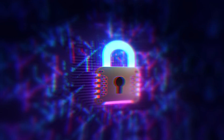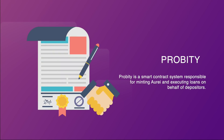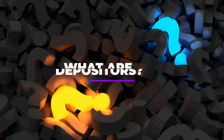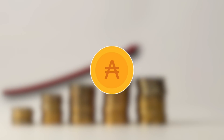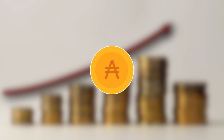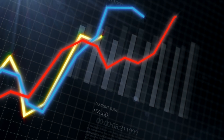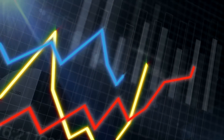Let me introduce Probity, and more specifically, the Probity Vault. Probity is a smart contract system responsible for minting RA stablecoin and executing loans on behalf of depositors. A depositor is a user who deposits collateral, such as Spark or F assets, into a Probity Vault, allowing them to receive RA or earn interest. This is what allows Probity to mint RA in a fully decentralized manner, satisfying the supply side of the Probity ecosystem — users willing to supply collateral which Probity can use to mint RA to lend to borrowers.